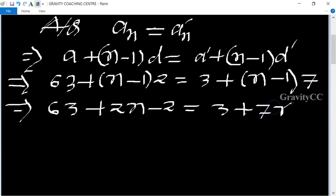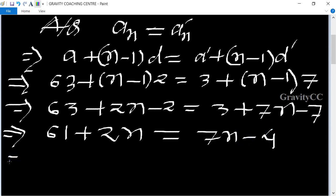Implies that 63 minus 2, which is 61 plus 2n, equals 7n minus 4. Implies that 61 plus 4 equals 7n minus 2n.